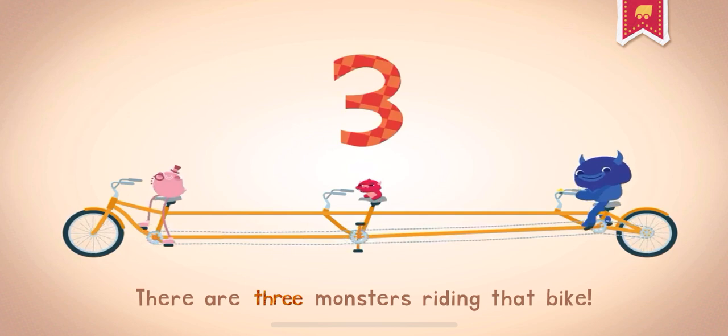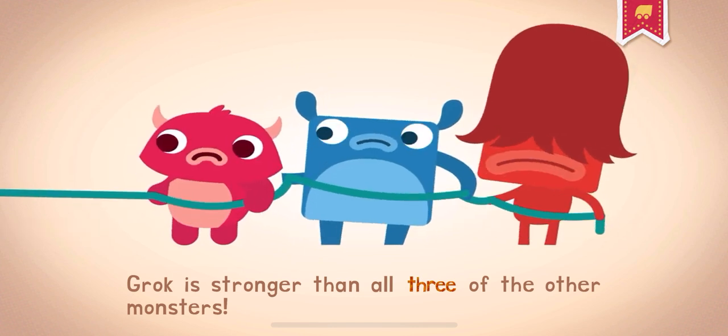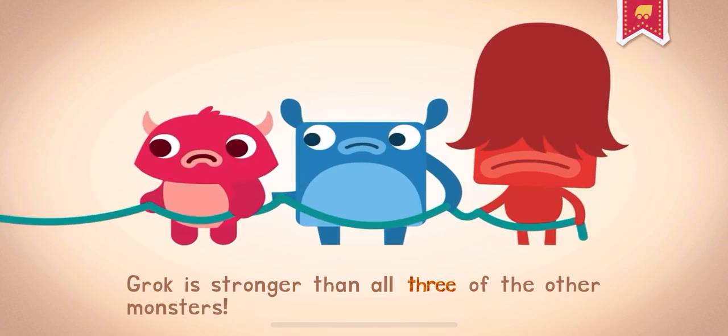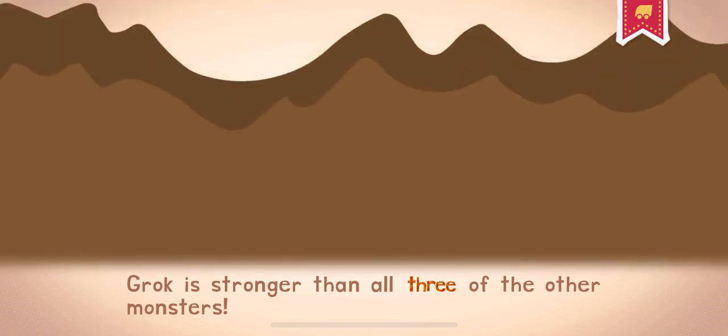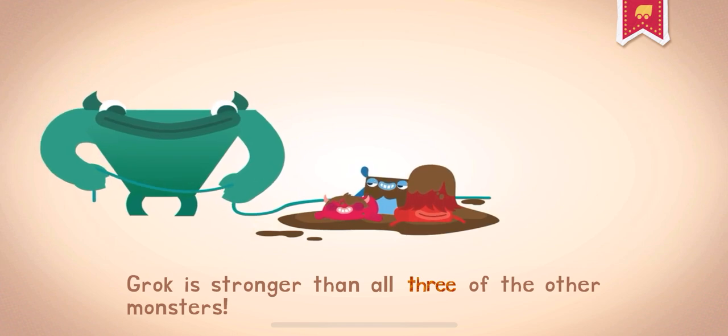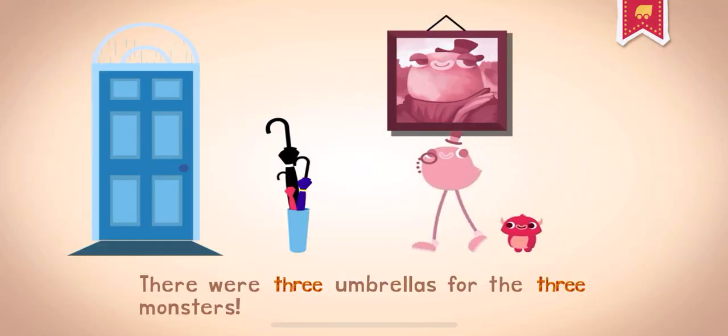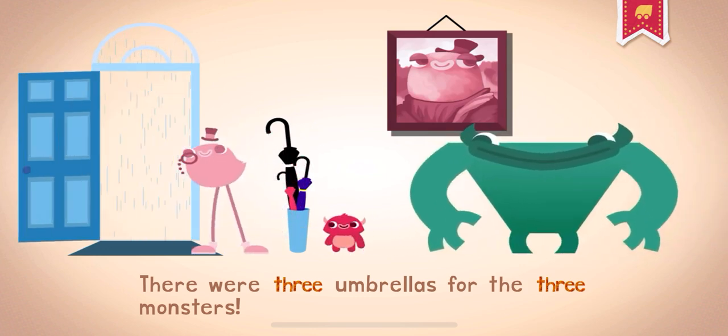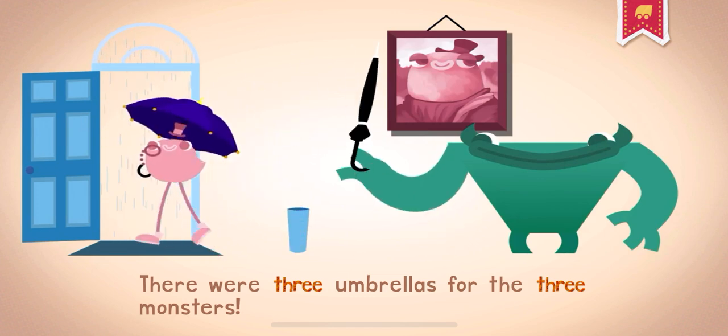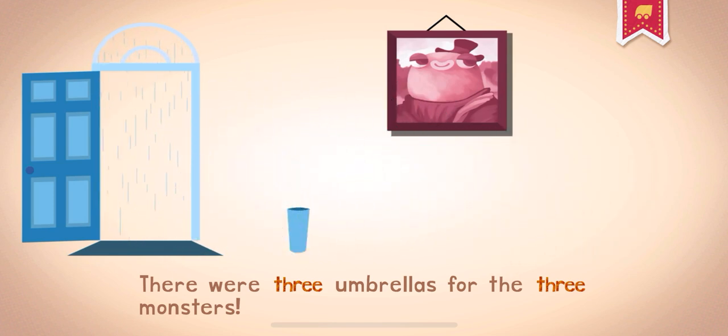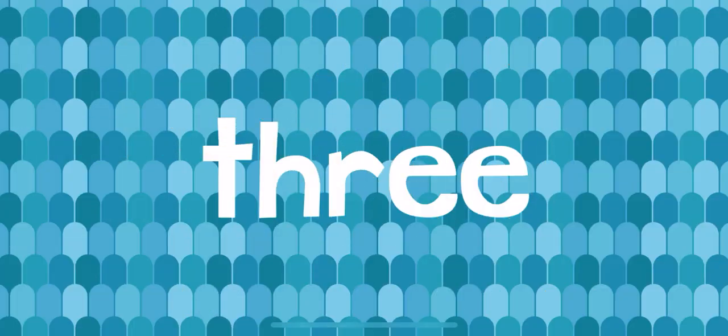Three. There are three monsters riding that bike. Three. Grok is stronger than all three of the other monsters. Three. There were three umbrellas for the three monsters. Three. It's as easy as one, two, three.